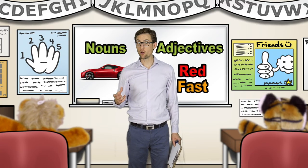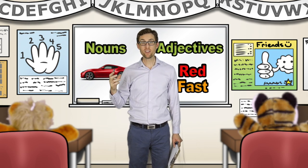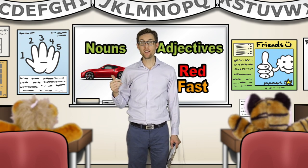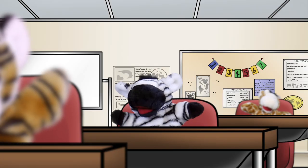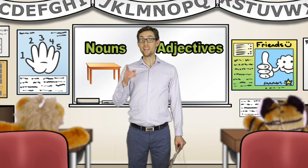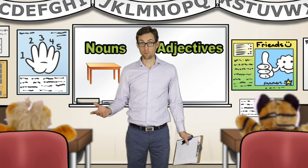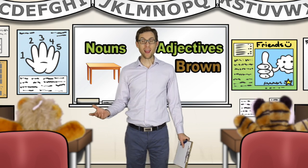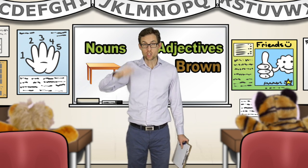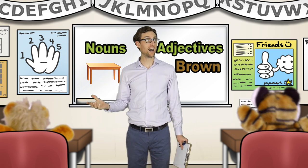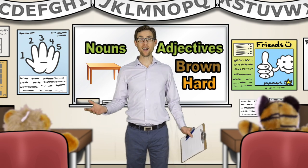So, the noun car is red — adjective — and fast. How about a desk? Yes. The desk is brown. And it's hard. That's right. It's brown and hard.